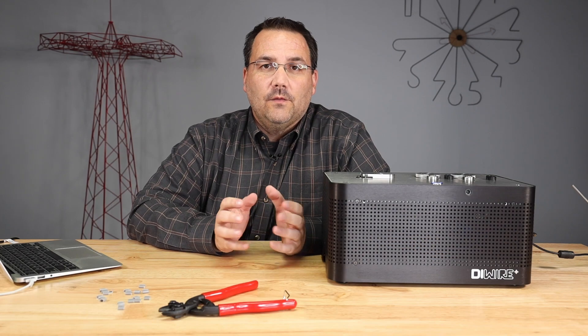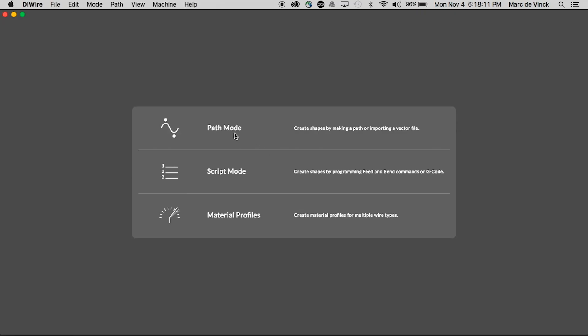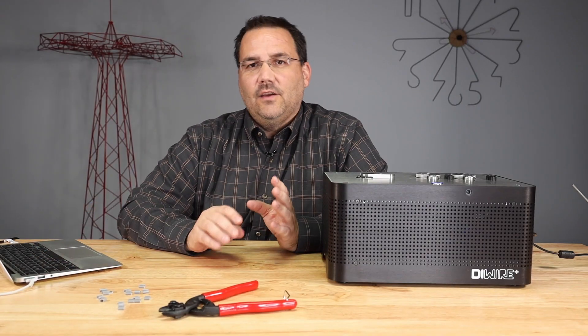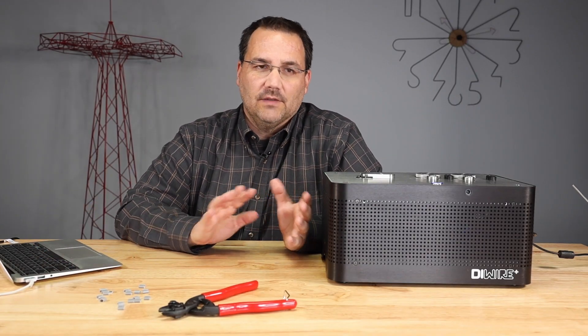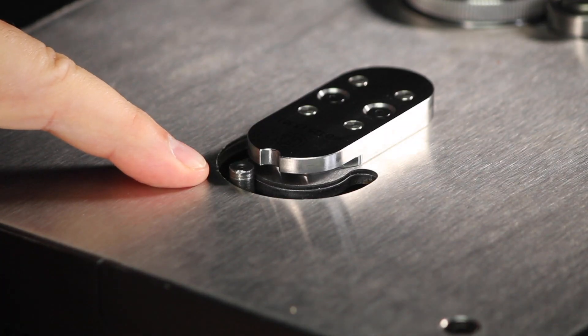So the first thing you're going to want to do is load up wire wear on your computer, select path mode, and before we bend anything, you want to home the machine. This preps it to receive the wire, and all you have to do is click home, and you'll see the bend pins move a little bit.